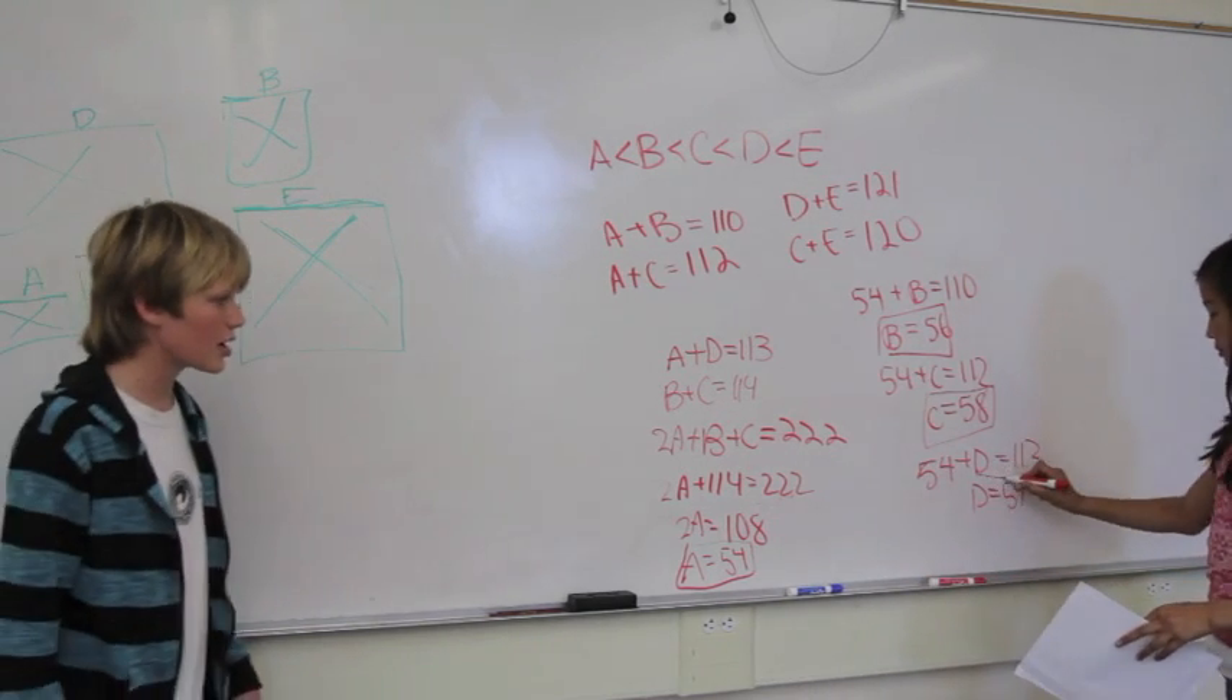But we don't know what A plus E is, so what we do is go to D plus E. And since we know the value of D is 59, we can say 59 plus E is 121.